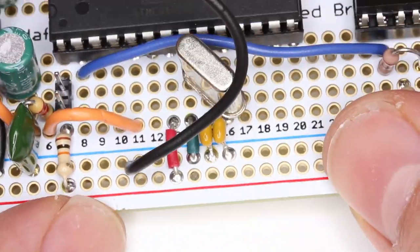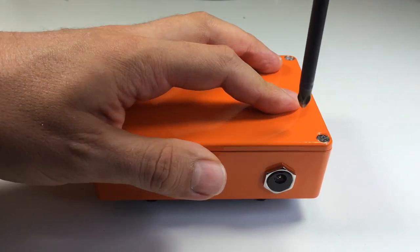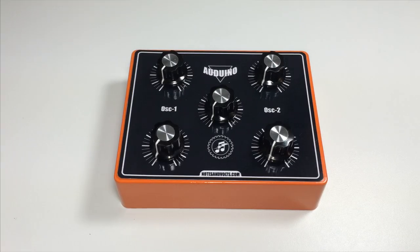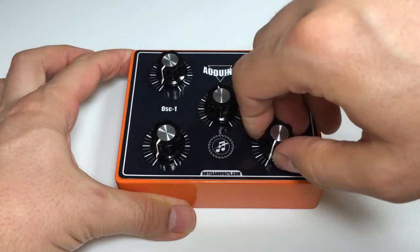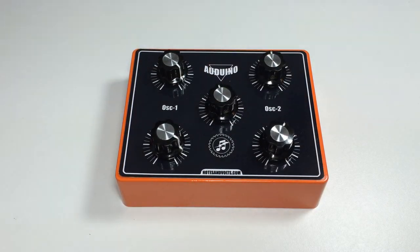Now flip the board over and solder the wire in place. You can now reassemble the synth and try it out. It should sound as good as it did before, but now has a proper line level output.